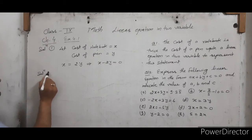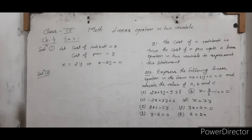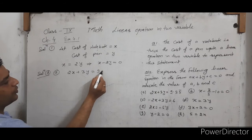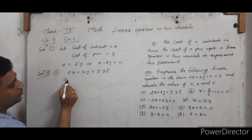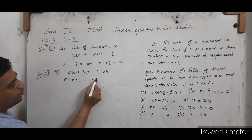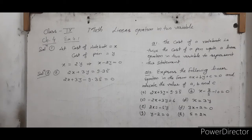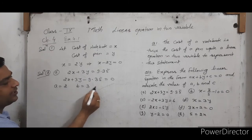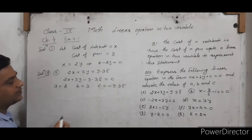Question 2 solution: Express the following linear equations in the form AX plus BY plus C equals to 0. The first part given is 2X plus 3Y equals to 9.35 bar. We can write it as 2X plus 3Y minus 9.35 bar equals to 0. Comparing with AX plus BY plus C equals to 0, we get A equals to 2, B equals to 3, and C equals to minus 9.35 bar.